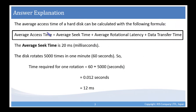Let's look at how we calculate the average access time of a hard disk. We can use the following formula: the average access time equals the average seek time plus the average rotational latency plus the data transfer time. The average seek time is 20 milliseconds.